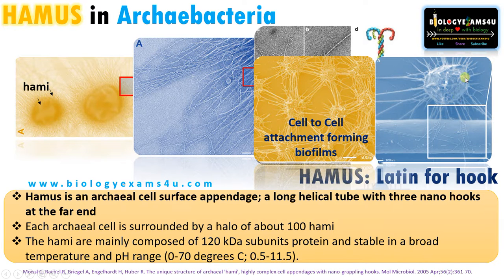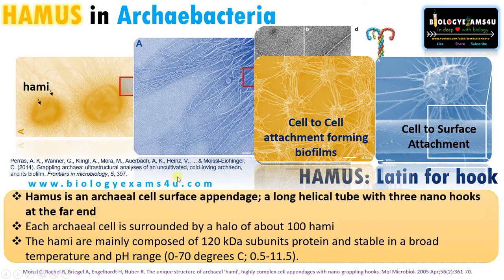The other function is cell-to-surface attachment. This is an archaebacteria with hami that is attached to a filamentous bacteria, so the second function is cell-to-surface attachment. These are two excellent papers explaining different aspects of hamus and also electron microscopic images — the link is in the description. You can refer to that for more.